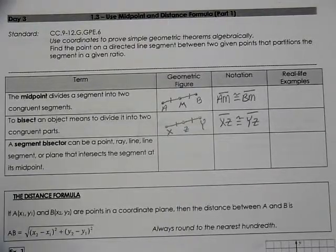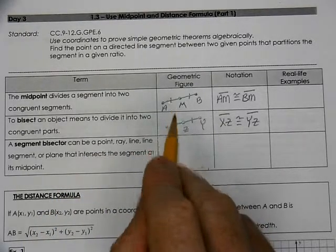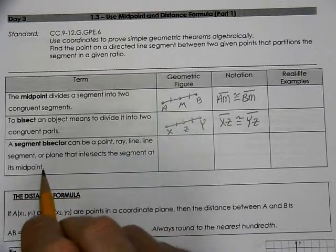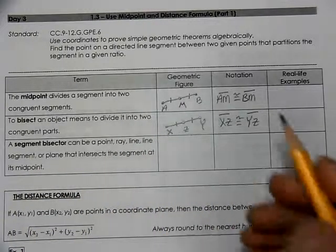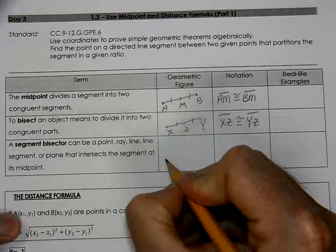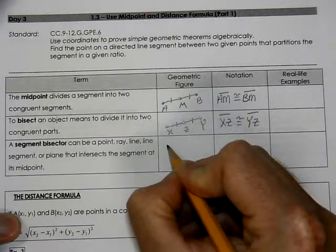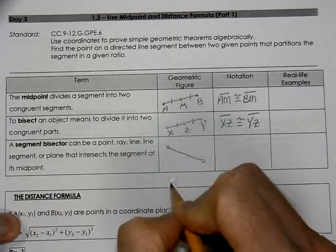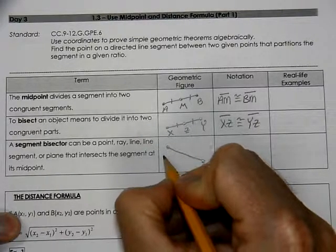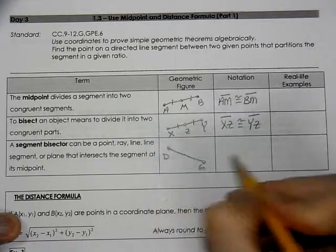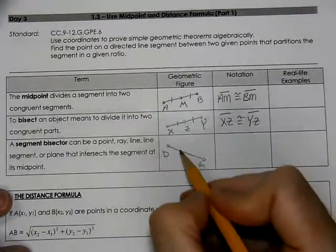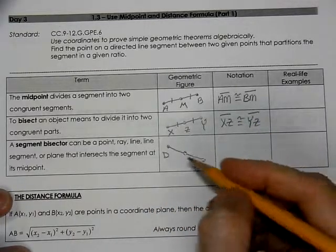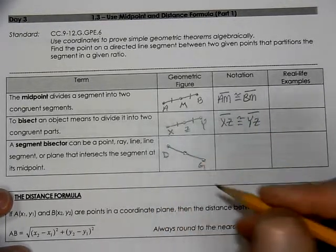A segment bisector is a point like we've shown here. It could be a ray, a line, a line segment, or even a plane that could cut it. We're going to have a segment. If we're going to have a bisector, a bisector could be a point. It could be a line or another segment.